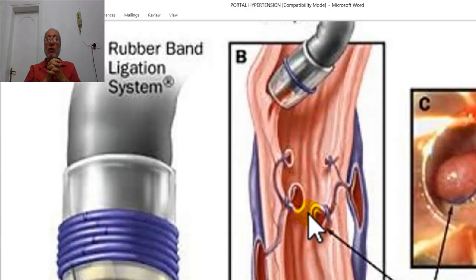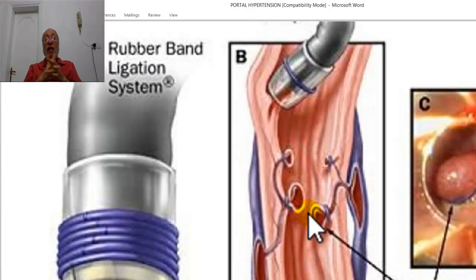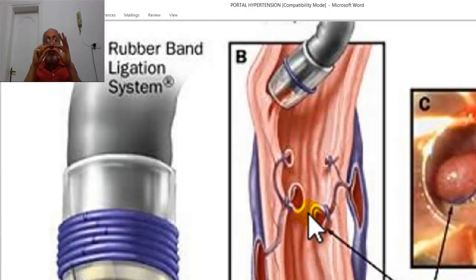Insert a Foley catheter, which is very important in any shocked patient to detect urine output accurately. Good urine output means proper transfusion. Insert an IV cannula or CVP line. Take a blood sample for blood picture, liver functions, coagulation study, and blood matching — or at least prepare units of fresh blood. Restore blood volume first by intravenous fluid, then by blood transfusion.